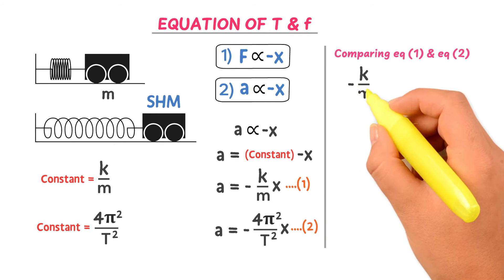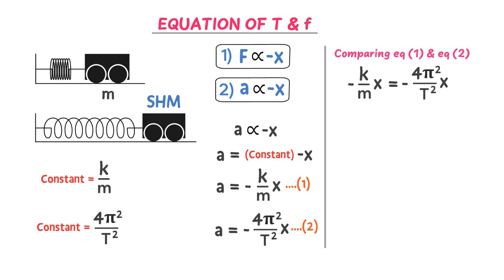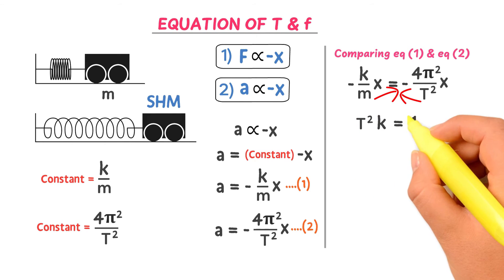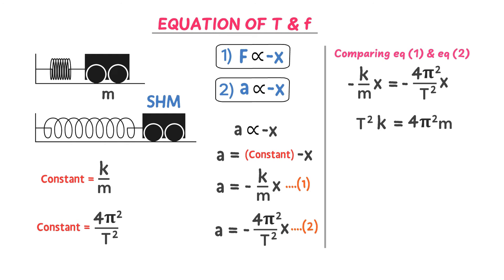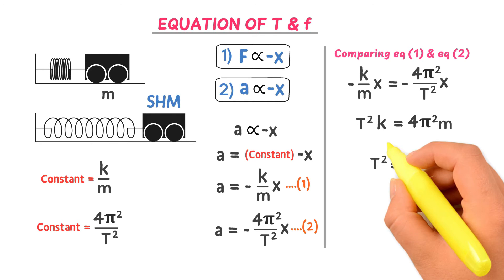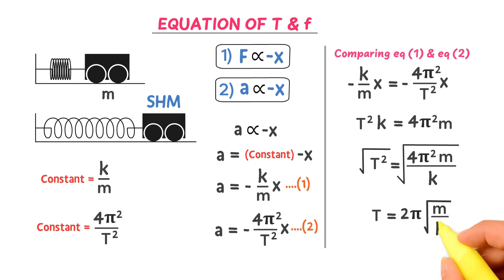Comparing Equation 1 and Equation 2: −K/M = −4π²/T². The negative signs cancel on both sides, and x cancels on both sides. Here T squared is the time period of the mass attached to the spring, so T is our subject. Shifting T² and M: T²·K = 4π²·M, so T² = 4π²M/K. Taking the square root of both sides: T = 2π√(M/K).